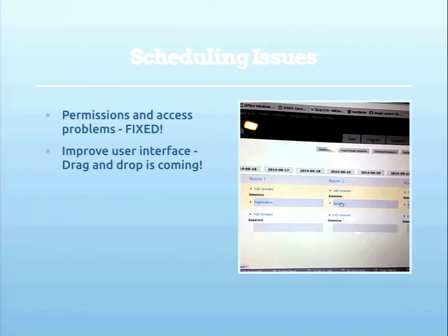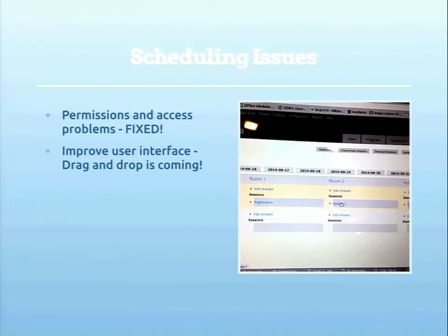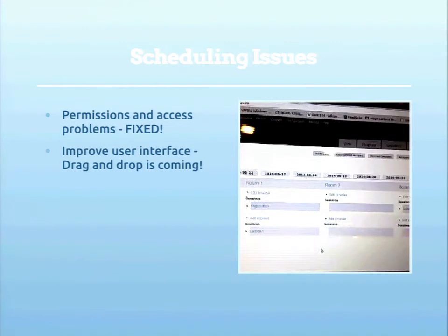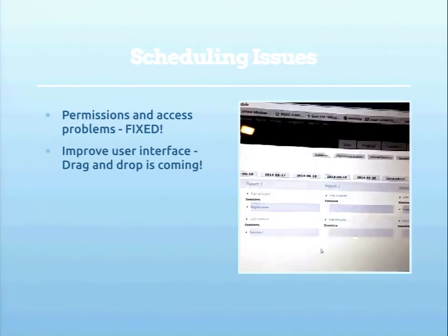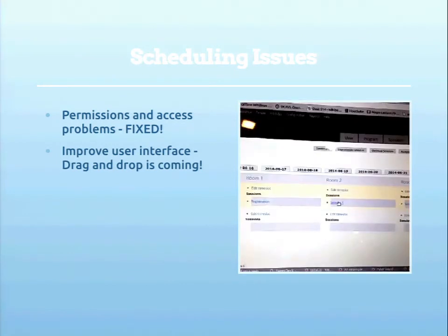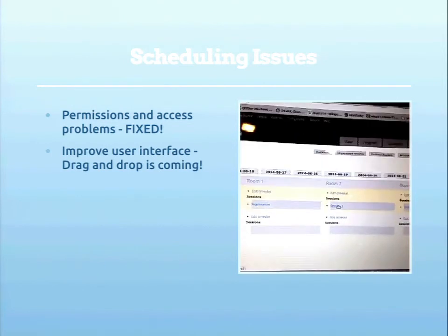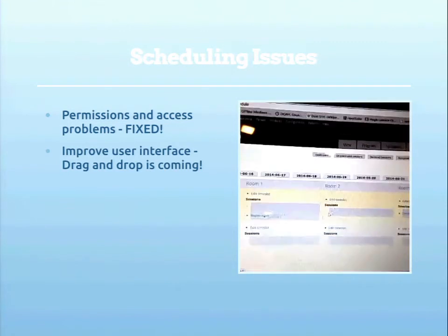We had some scheduling issues — different permissions and access problems, like not allowing session organizers with a certain role to mark a node as accepted versus just the original unprocessed state. Those are all fixed. One of the things we'd like to fix is the user interface for the grid. We have a patch in the queue for a drag-and-drop scheduler where admins can take an unprocessed session and drag it into a time slot, making it really easy to create a schedule without going into individual sessions.